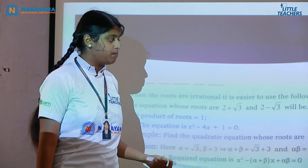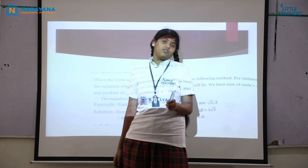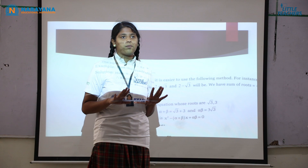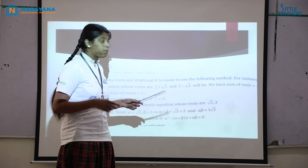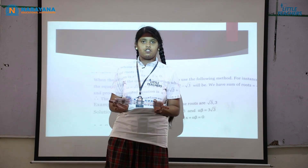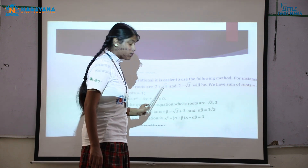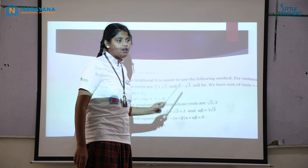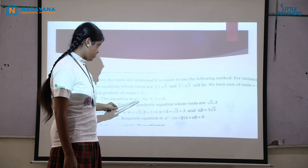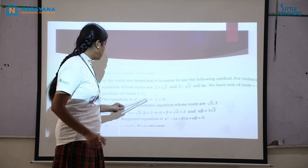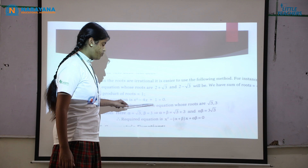Now let me take conjugate roots: 2 + √3 and 2 − √3. Sum of the roots: (2 + √3) + (2 − √3) = 4, since the √3 terms cancel. Product of the roots: (2 + √3)(2 − √3) = 2² − (√3)² = 4 − 3 = 1. So the equation is x² − (sum of roots)x + (product of roots) = x² − 4x + 1 = 0.